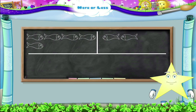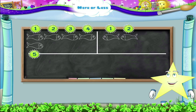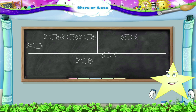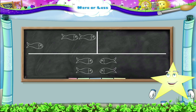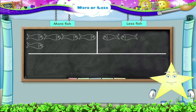Starry, there is another way to find out the difference between more and less. Look at this board. On this side, there are one, two, three, four, five fish. On the other side, there are one, two fish. Now let's form one-to-one pairs — one fish to one fish, the second fish to the next fish. We still have three unpaired fish on this side. So we say, more fish and less fish.